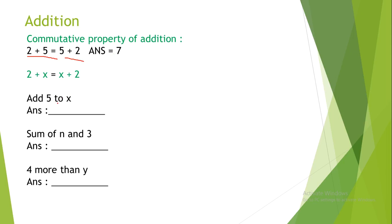Add 5 to x. So, the answer would be 5 plus x or x plus 5. Find the sum of n and 3. So, the answer would be n plus 3 or 3 plus n. 4 more than y. So, the answer is y plus 4 or 4 plus y.